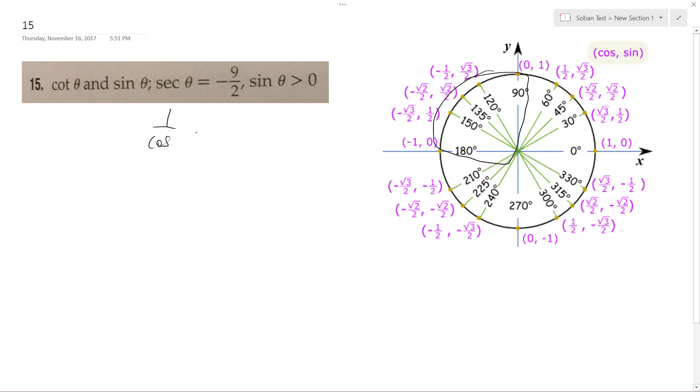So based off of that, the reciprocal of negative 9 over 2 is negative 2 over 9. So we're going to have 2, this is going to be 9, this is going to be negative 2, and then 81 minus 4, which is 77.